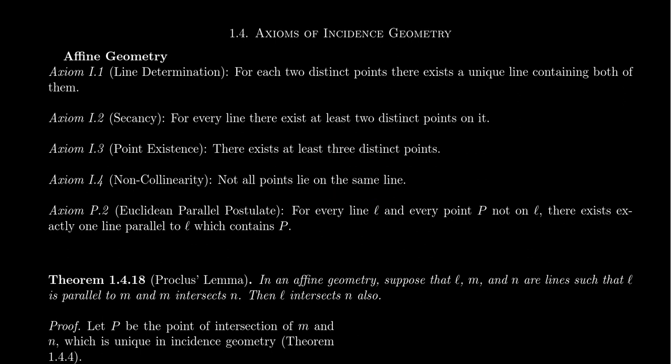Those four axioms give us an incidence geometry. And then if we equip the incidence axioms with one parallel axiom, particularly the Euclidean parallel postulate, this creates for us the idea of an affine geometry.